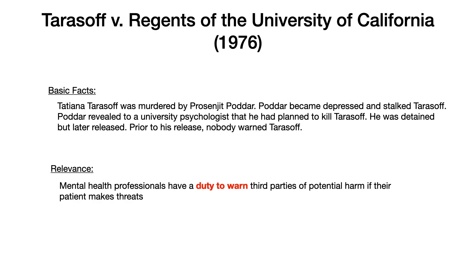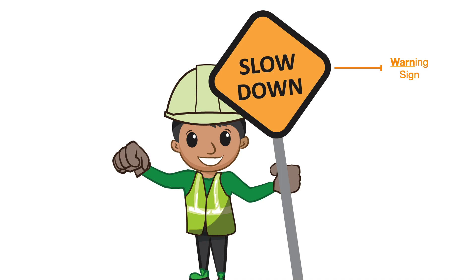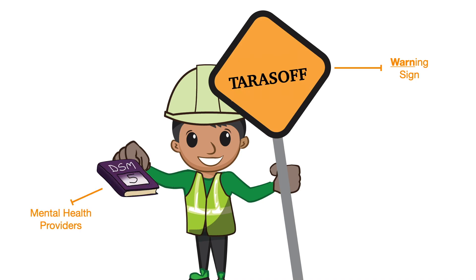The way to memorize this is to think about a warning sign. Here we have a warning sign like a traffic sign, and we replace the words 'slow down' with Tarasoff. So Tarasoff equals duty to warn. Additionally, the individual holding the warning sign is also holding a DSM, which helps you remember that this is associated with mental health care and mental health providers. Tarasoff equals warning, DSM for mental health.